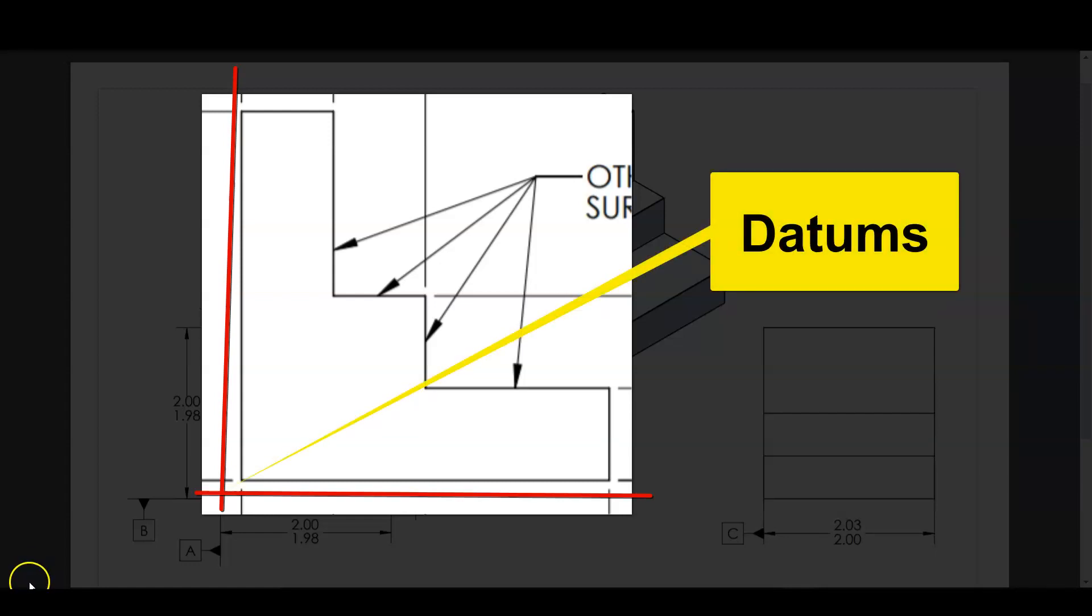That's what the datums are. It's that theoretical geometry that we can't see. It doesn't actually exist. It's something theoretical that we use to get accurate measurements from the most crucial surfaces and to simulate final assembly, to simulate those surfaces in final assembly.